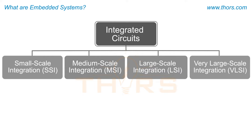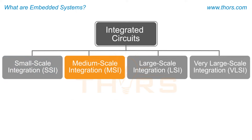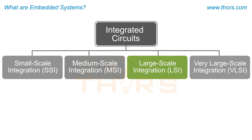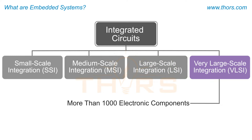Based on the number of electronic components that can be assembled in a chip, integrated circuits are classified as: small scale integration (SSI) circuits containing less than 10 components; medium scale integration (MSI) circuits containing more than 10 but less than 100 components; and very large scale integration (VLSI) circuits containing more than 1000 electronic components.